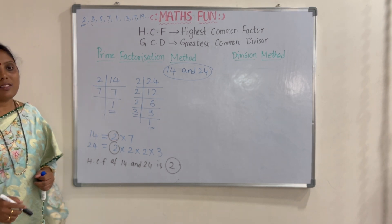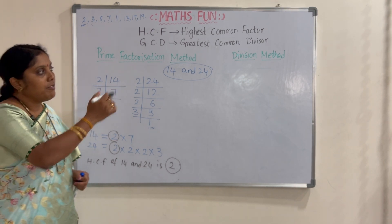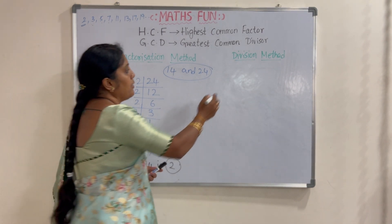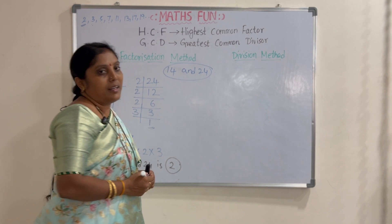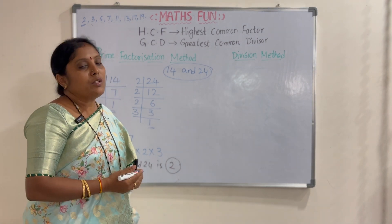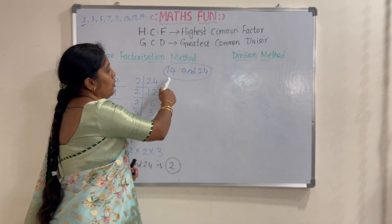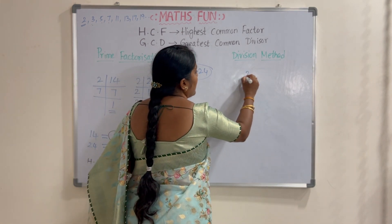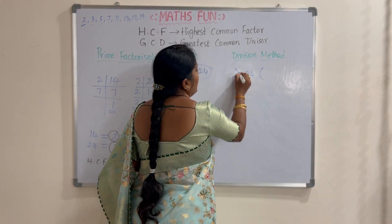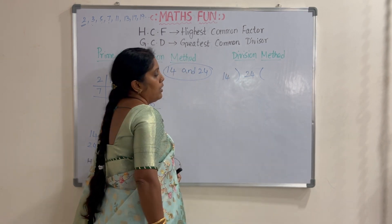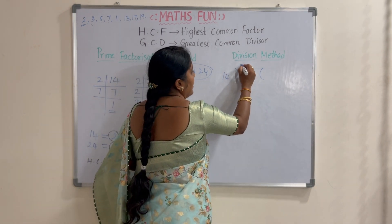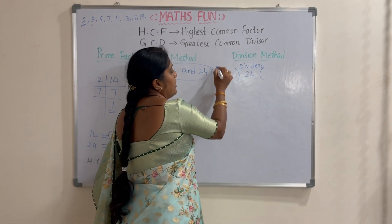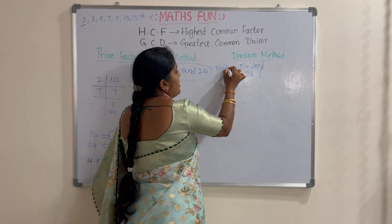For the same numbers, let us find the HCF by the long division method. In this method we divide the two numbers 14 and 24. We divide the bigger number 24 by 14. Here 24 is the dividend and 14 is the divisor.